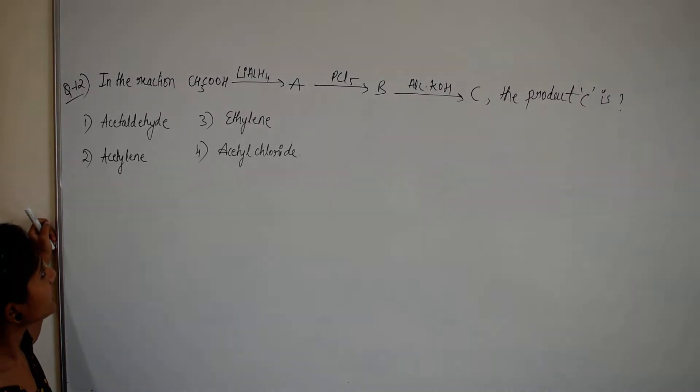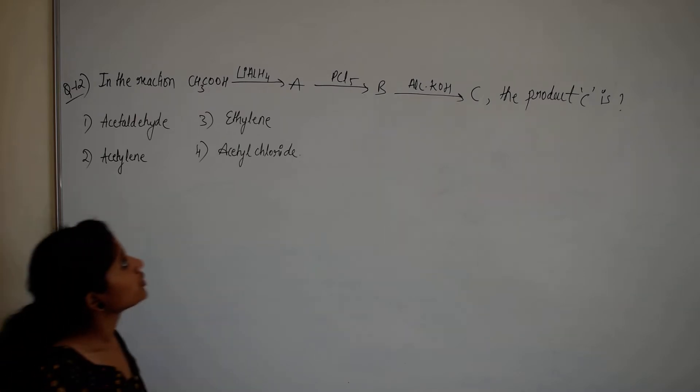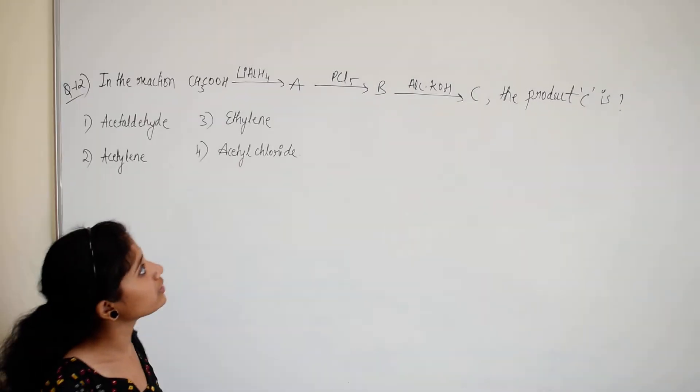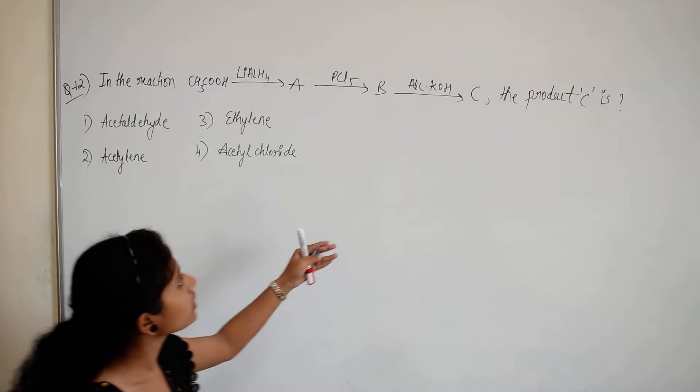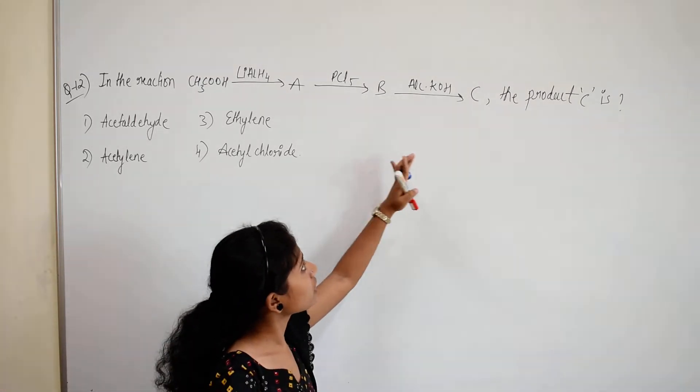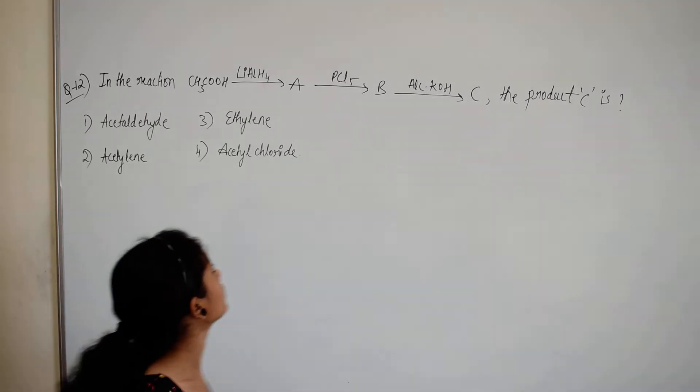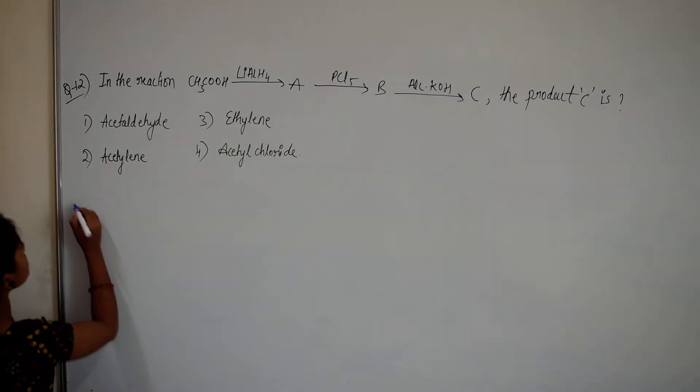So in this reaction, CH3COOH reacting with LiAlH4, lithium aluminum hydride, gives A, and A reacts with PCl5 gives B, and B reacts with alcoholic KOH gives C. You have to find the product C. So let's see.